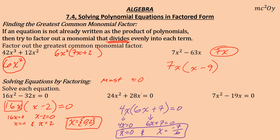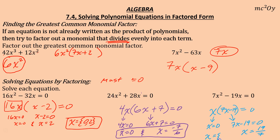One more problem. Looking at 7x² − 19x: numerically, 7 and 19 are both prime, so only 1 goes in — we don't use that. But for variables, x² and x share a factor of x. Factoring out x: x(7x − 19) = 0. Setting x = 0 is one solution. Setting 7x − 19 = 0: add 19, divide by 7, gives x = 19/7. Solutions are x = 0 and x = 19/7.